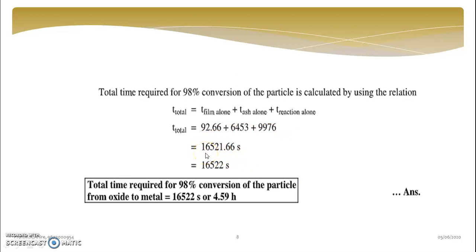So total time is 16521.66 second. So finally if you just round up 16522 second. If you divide and if you convert it second into hour, you will get 4.59 hour. Means you have divided it by 3600.